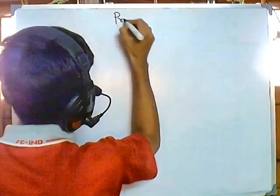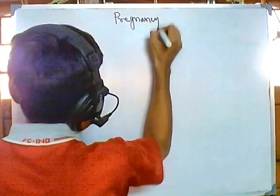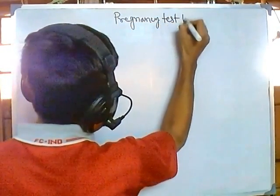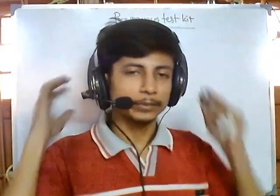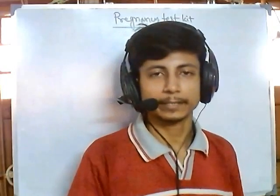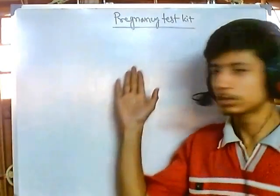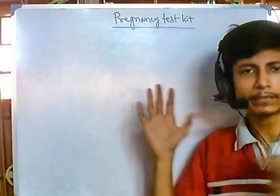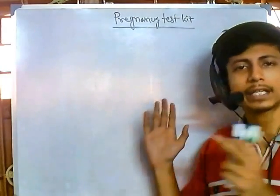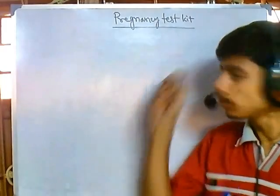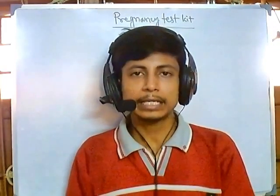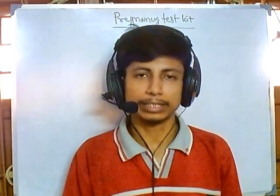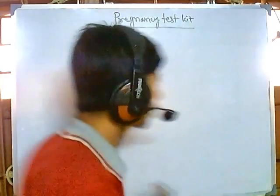Welcome back guys. In this video tutorial we'll be talking about the pregnancy test kit — how it actually works at home. The pregnancy test kit is made for human beings, but it can also be tested for other mammals, because the foundation principle on which the pregnancy test kit works is the release of a hormone with the urine. That hormone is termed as human chorionic gonadotrophin.